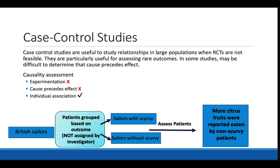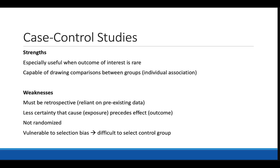In a case control study on our scurvy example, we take our group of British sailors and group them based on outcome — whether or not they have scurvy. We have a group of sailors with scurvy and a group without scurvy, then look at what they ate or how much citrus fruit was consumed by the non-scurvy patients versus those with scurvy. Strengths include usefulness for rare outcomes and the ability to draw comparisons between groups. Weaknesses are that it's retrospective, reliant on pre-existing data, not randomized, and vulnerable to selection bias, making it difficult to select a control group.